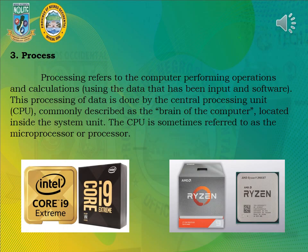Processing refers to the computer performing operations and calculations using the data that has been input in software. This processing of data is done by the central processing unit — CPU — commonly described as the brain of the computer, located inside the system unit. The CPU is sometimes referred to as the microprocessor or processor.